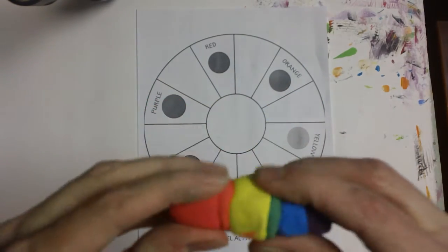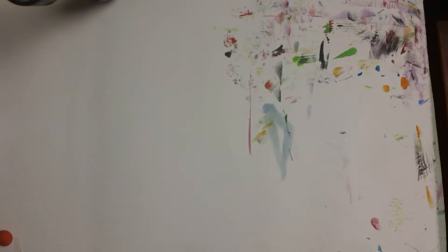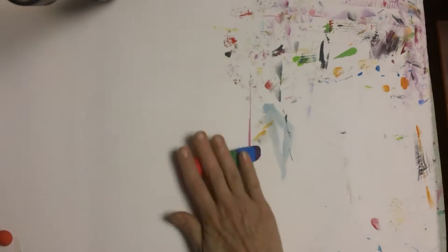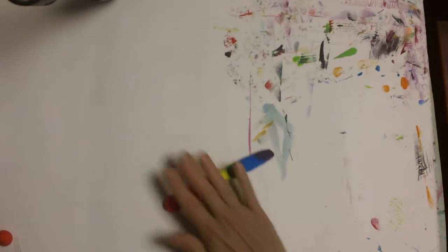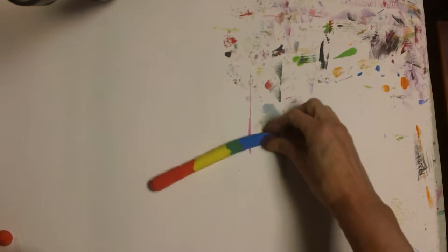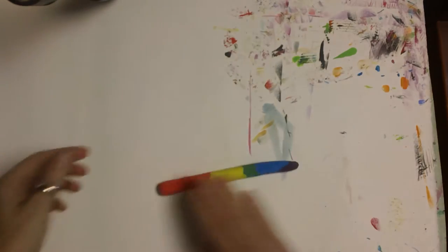Now that I've squished them together, let me just move this out of the way. Right on my table, I'm going to take these and roll it like a snake. Roll it like a snake. Oh look at all those colors. It's like a nice stretched out rainbow.